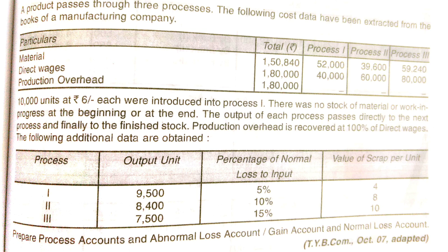We have been given normal loss percentages: Process 1 is 5%, Process 2 is 10%, and Process 3 is 15%. Scrap value per unit is given as Rs. 4, Rs. 8, and Rs. 10 respectively. If the scrap rate is given, it means it will be scrap loss. If the scrap rate is not given, it will be weight loss. So here we assume normal loss as scrap loss.